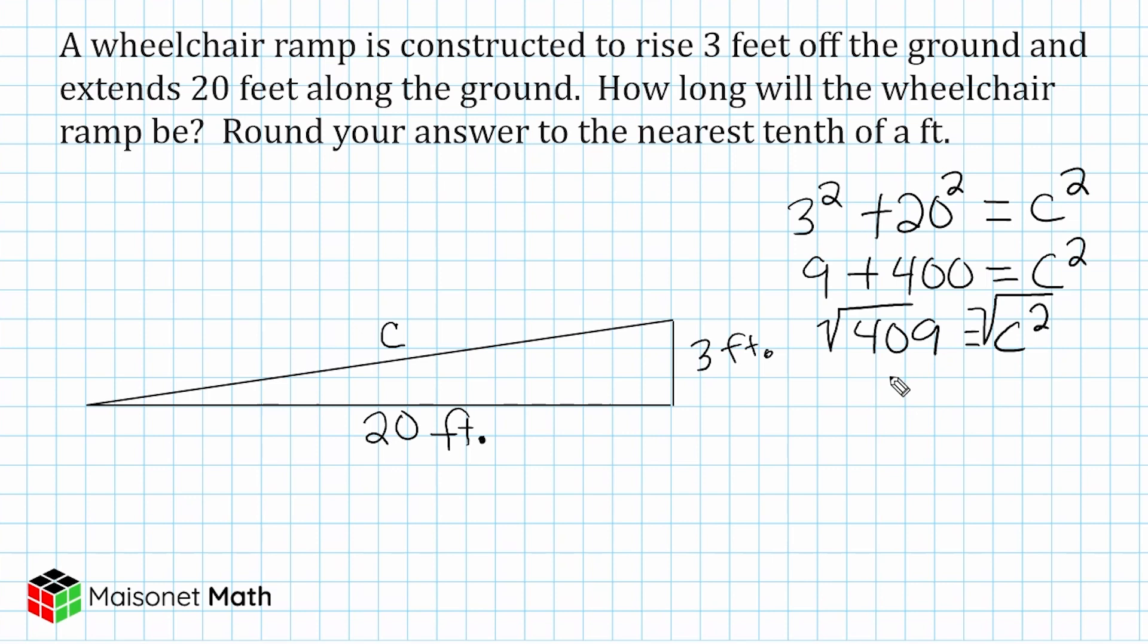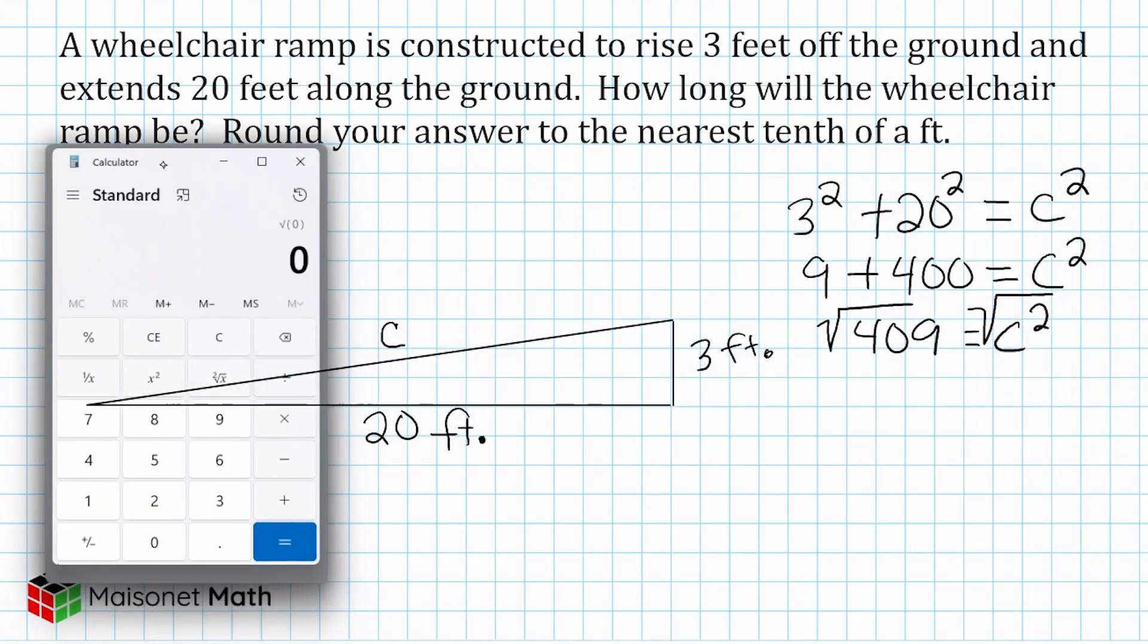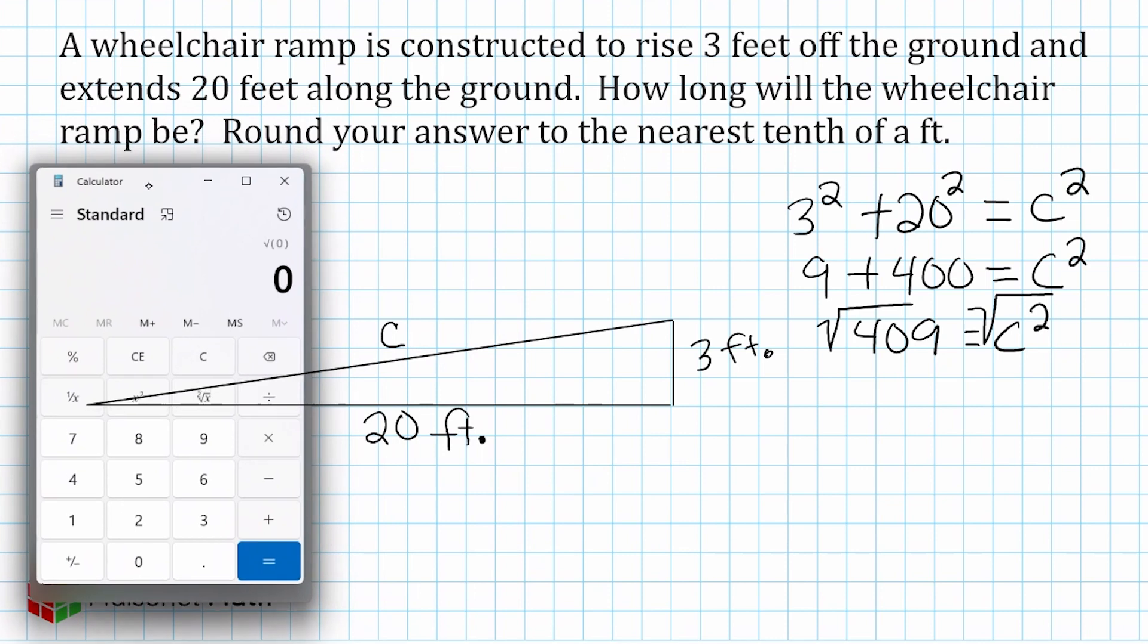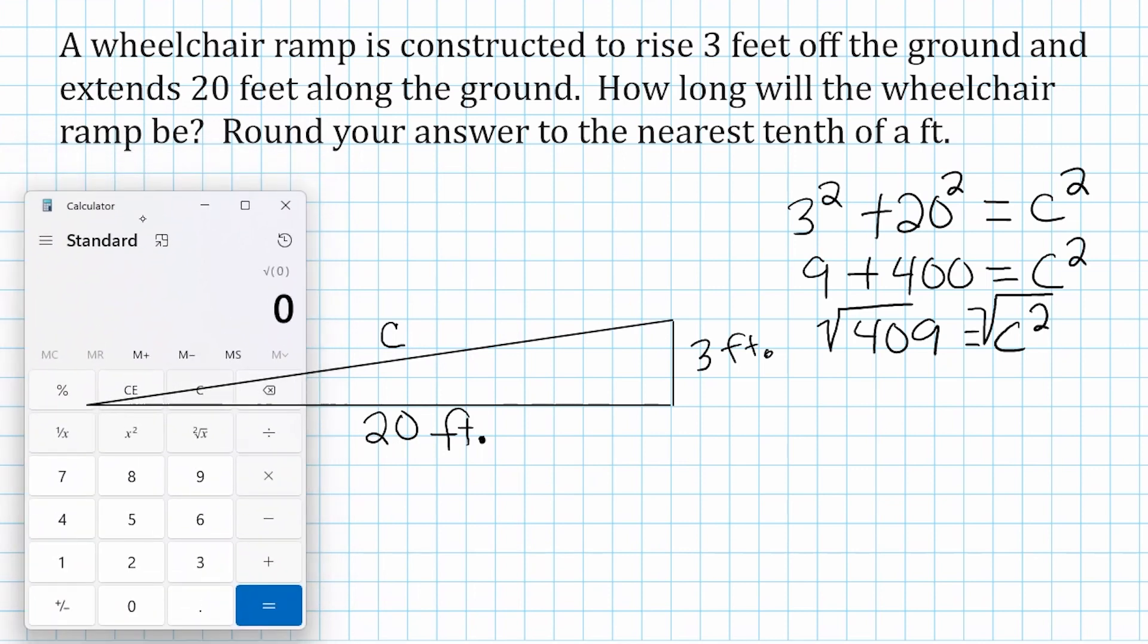Now we know the square root of 400 is 20, and this is a little bit bigger than 400. So our ramp length is going to be a little bit bigger than 20. And we have to punch this into a calculator and round to the nearest tenth of a foot. So let's go ahead and just type that into our calculator right here. So we're going to type in 409 and then we're going to hit the square root button and we get 20 point a bunch of numbers. We can see that there's no pattern here and that it's not terminating. So this is an irrational value.